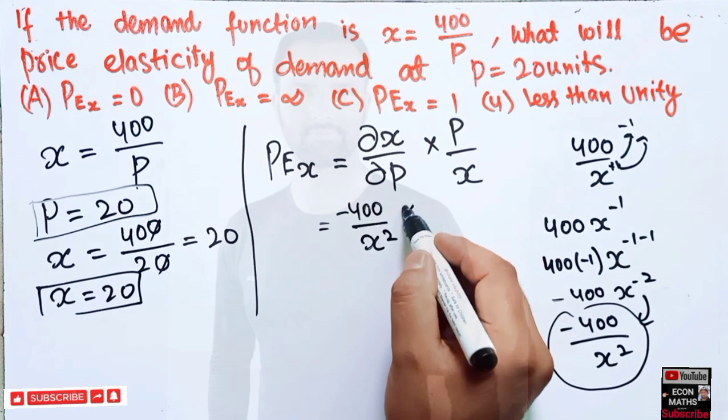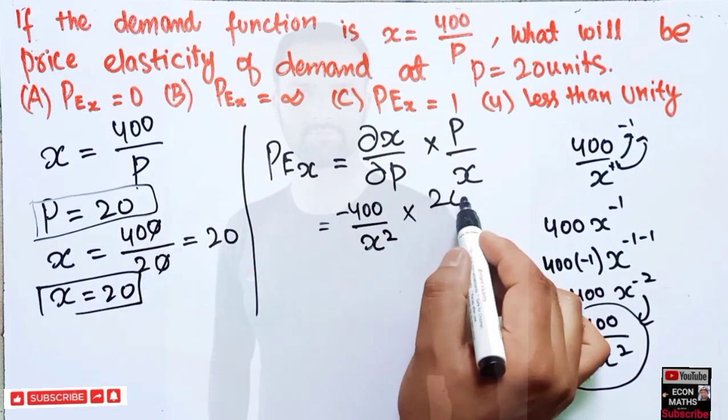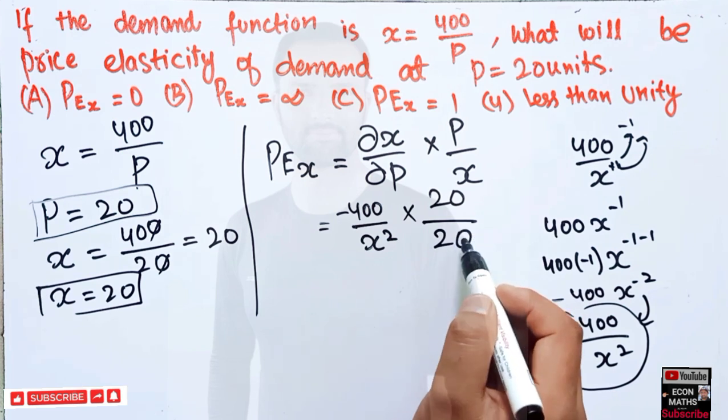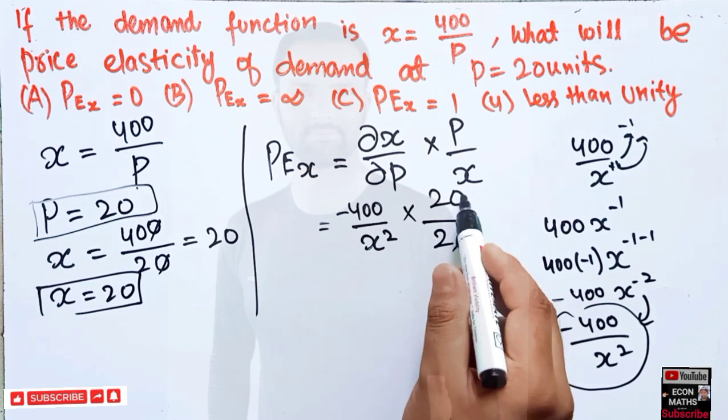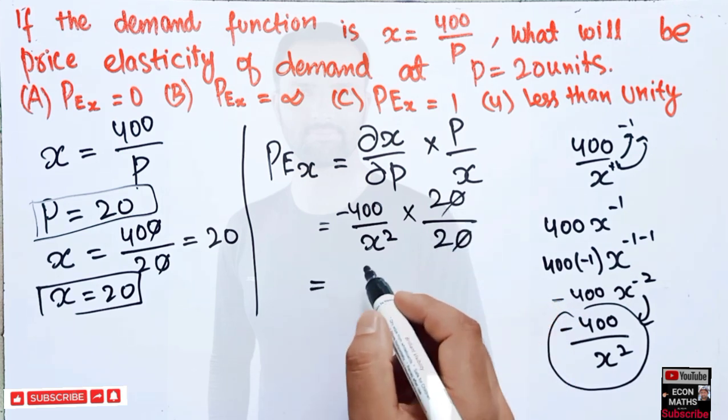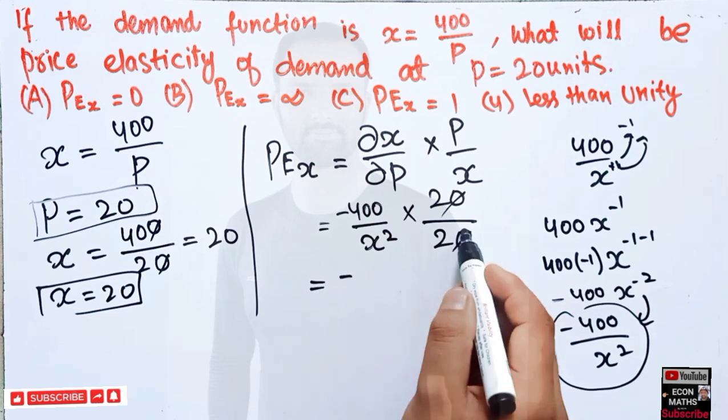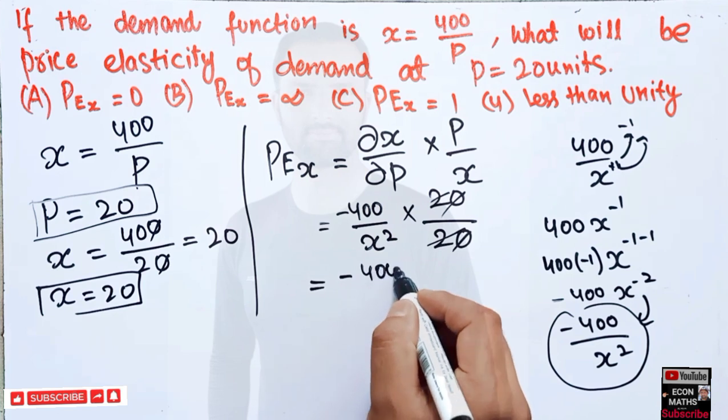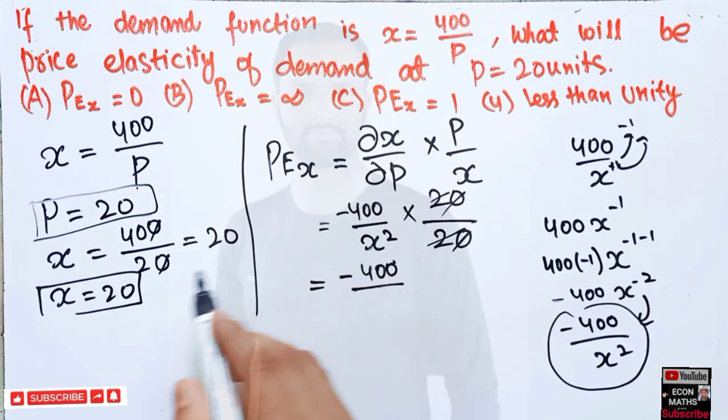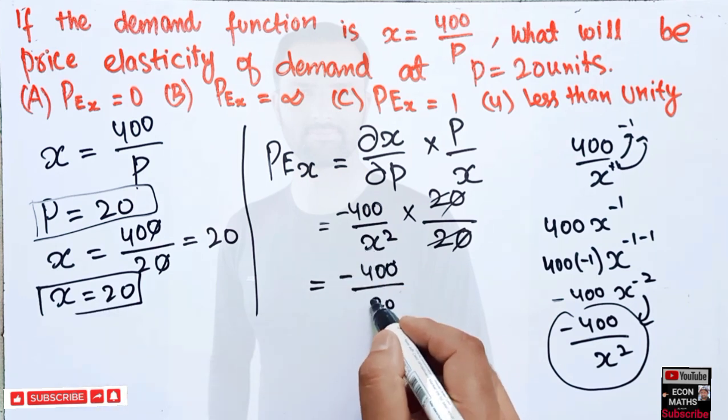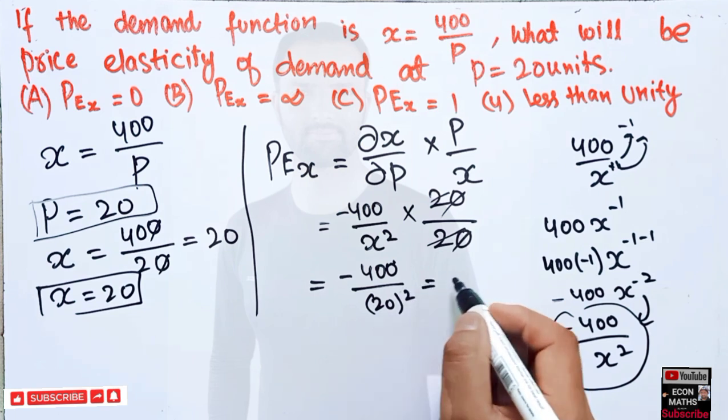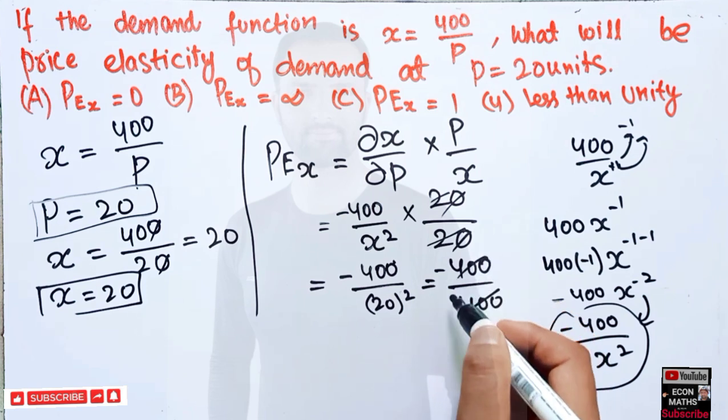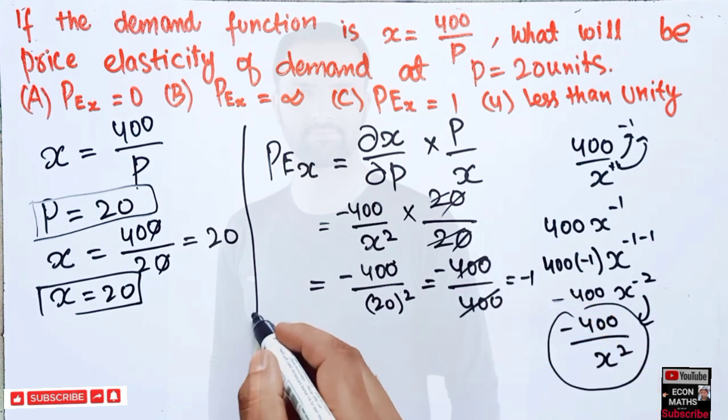And what is the value of p? P is 20, which is given. What is the value of x? It is also 20. This 2 and 0 and 0 will get cancelled. So we have minus 400 upon the value of x. X is 20, so this is 20 square. So this becomes 400 upon 400. So we are left with minus 1.